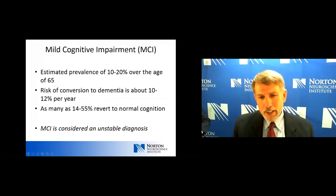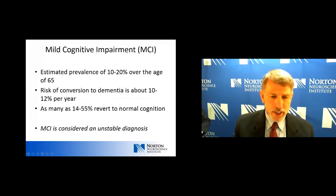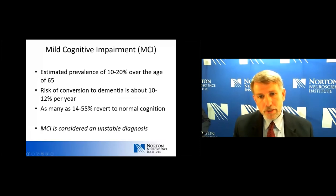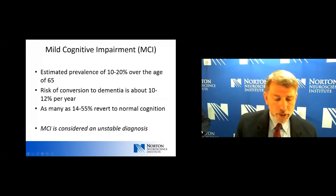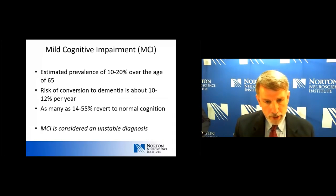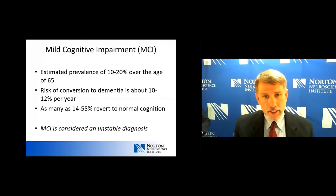It's speculated that the reason MCI is unstable is that there is not a single cause. In some cases it may be due to a degenerative condition like Alzheimer's disease, and in that case we'd expect it to progress to a frank dementia. But in other cases it may be related to medications, other medical or metabolic disturbances, even stress or depression. There may be a number of causes that can lead to mild cognitive impairment.